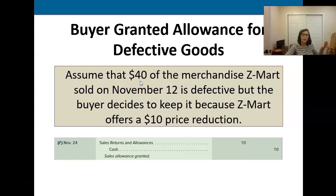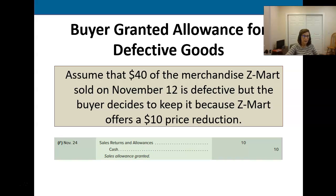In this case we're giving an allowance for a buyer that purchased some defective goods, and we're still going to use the sales returns and allowances account. That account serves double duty — not only does it track our returns, it tracks our allowances. So it's going to get a debit for the ten dollar price reduction, and then we're going to give them back ten dollars in cash.